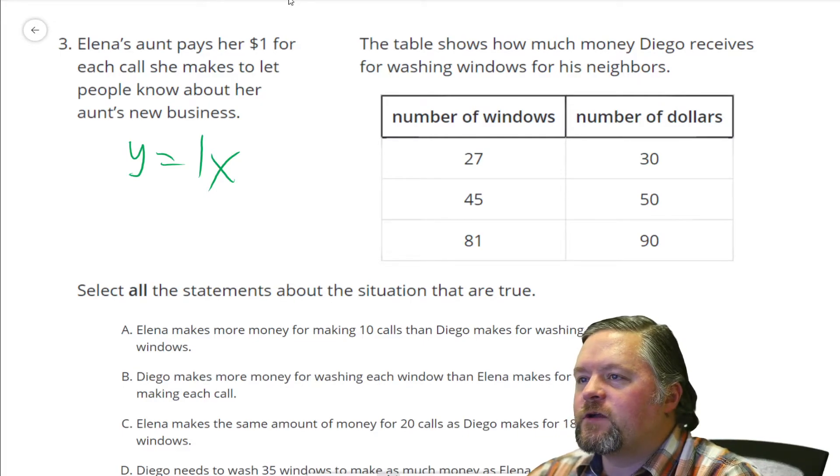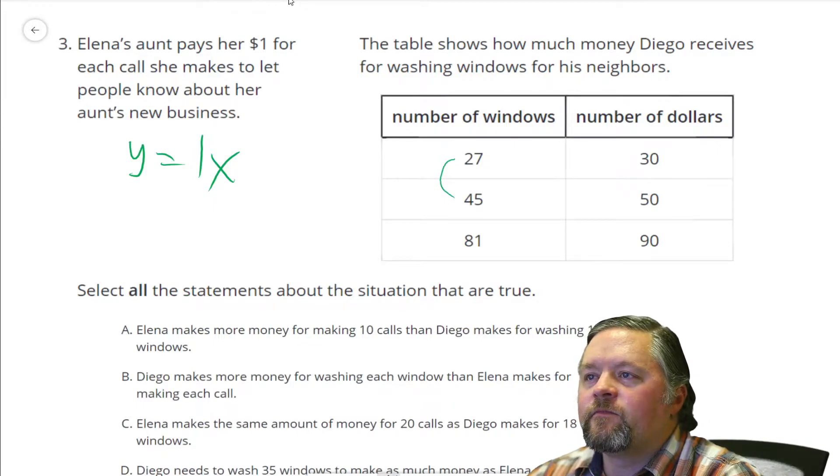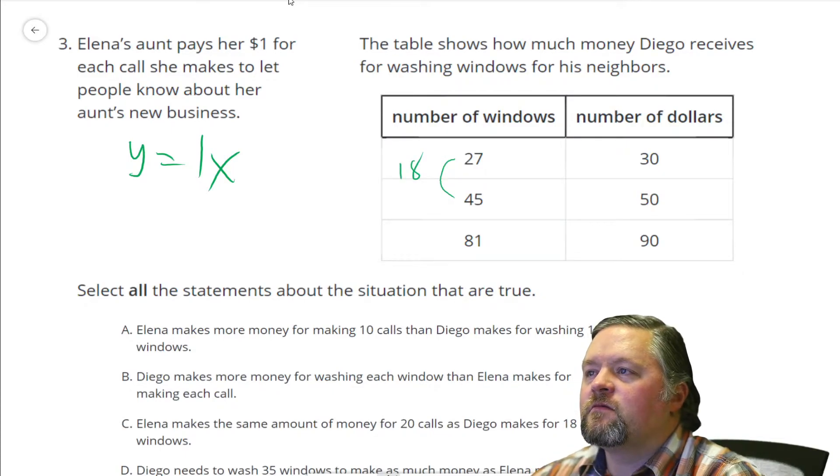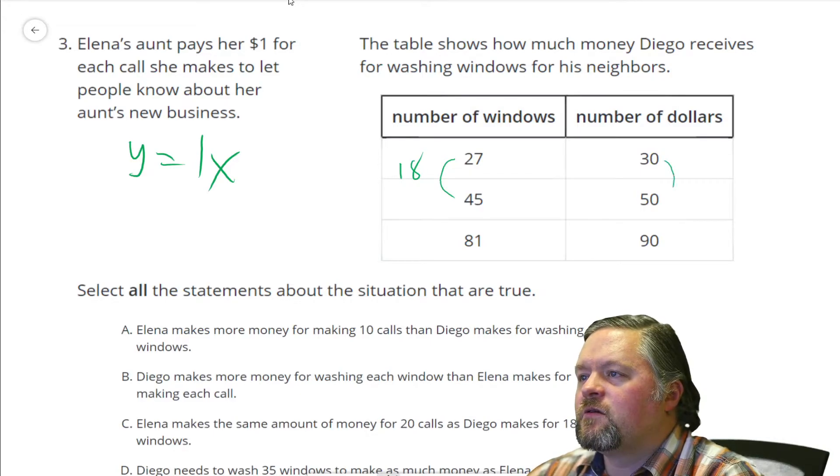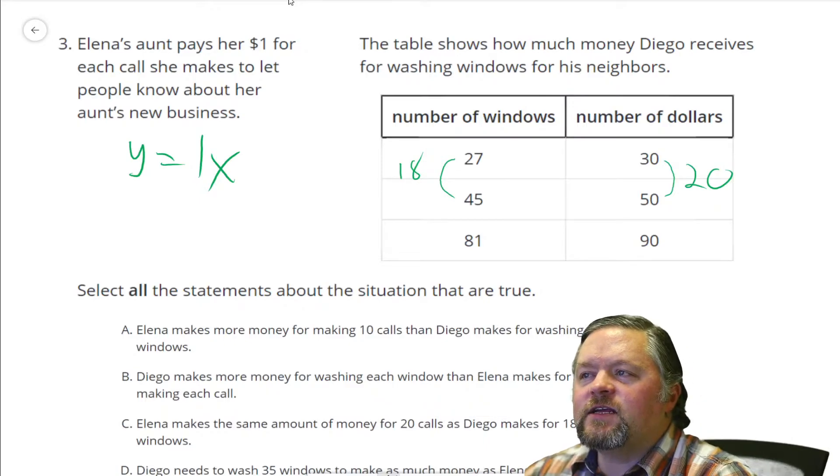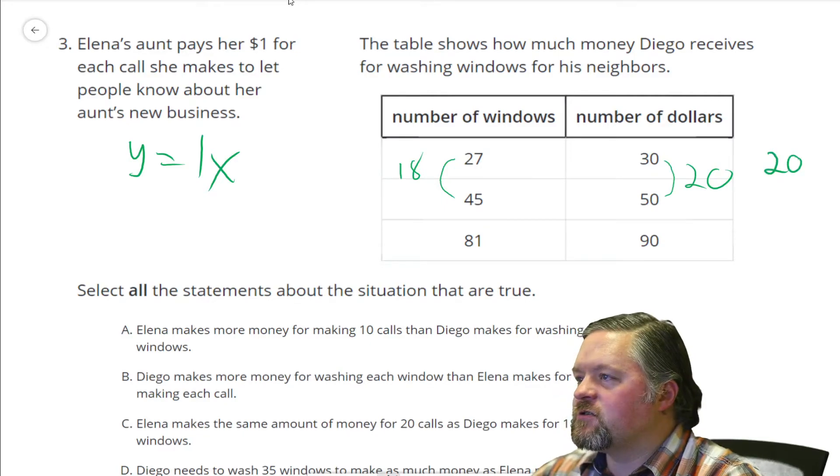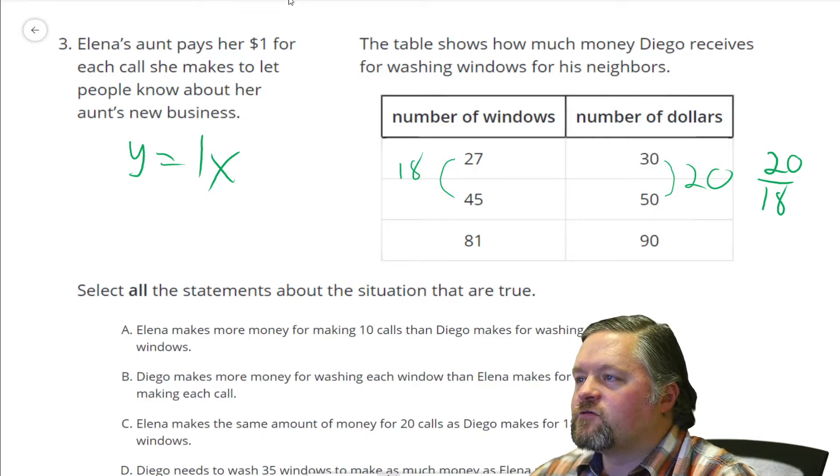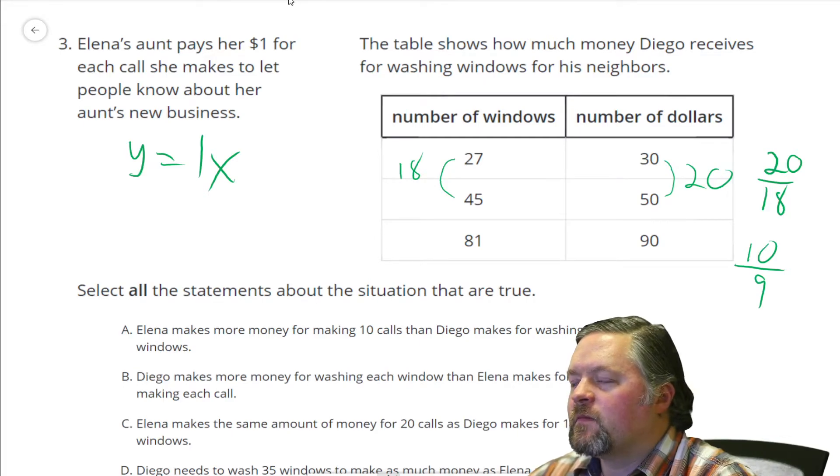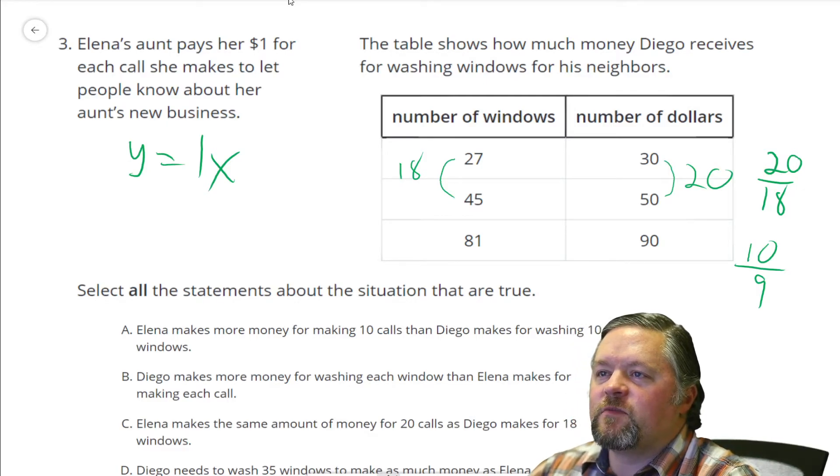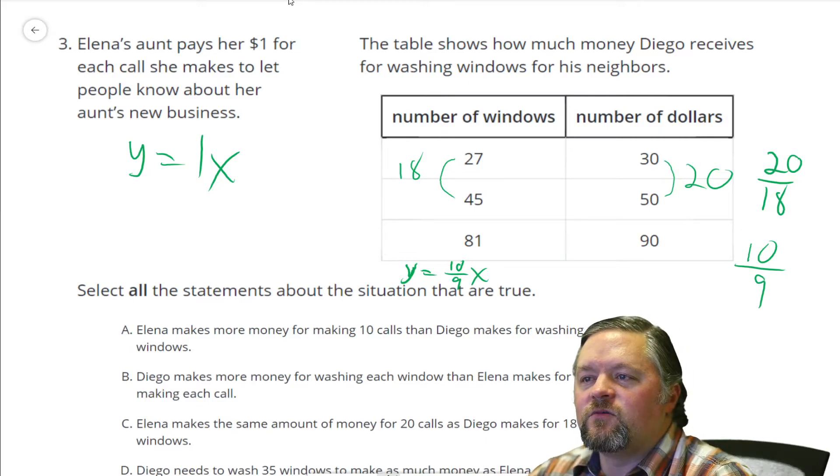From 27 to 45 is 18. And he gets $20. So he gets $20 for every 18 windows. Let's give that a unit rate. $20 for 18 windows. Those are both even, so that could be 10 over 9, which is 1 and a 9th. So this equation would be Y equals 10/9ths X, a little bit more than 1.